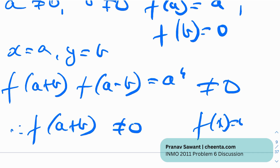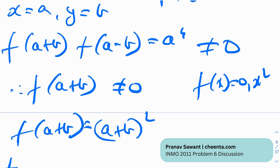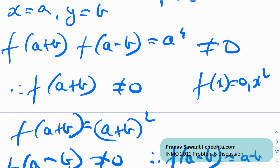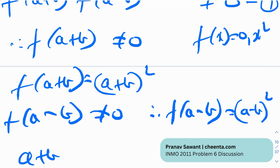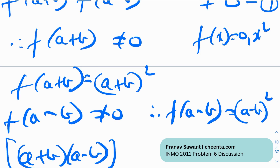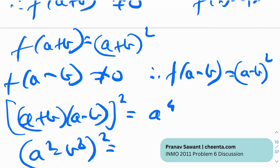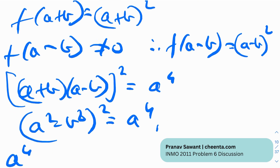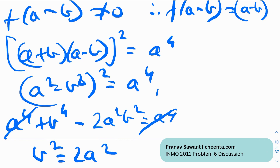Since f(a+b) ≠ 0 and f(a−b) ≠ 0, and f of any value is either 0 or the square of its argument, both f(a+b) = (a+b)² and f(a−b) = (a−b)² must hold. So our equation reduces to (a+b)²·(a−b)² = a⁴, which simplifies to (a²−b²)² = a⁴. Expanding: a⁴ + b⁴ − 2a²b² = a⁴, giving b⁴ = 2a²b², so b² = 2a².